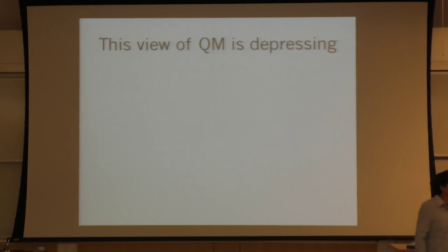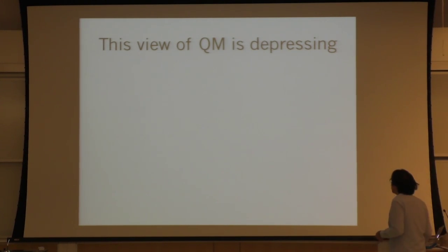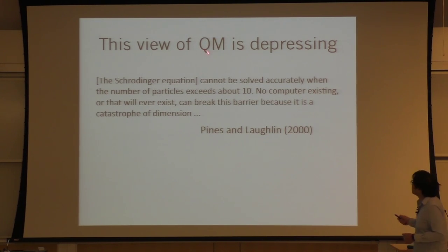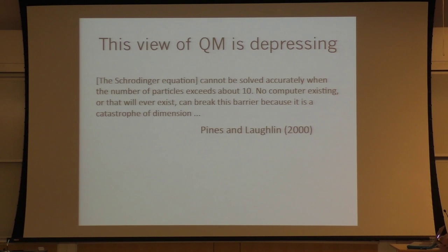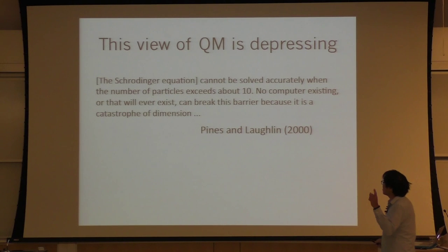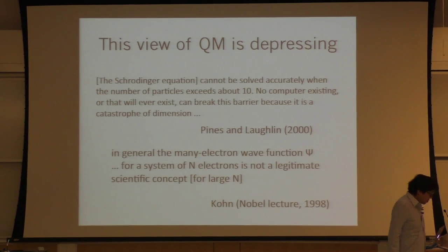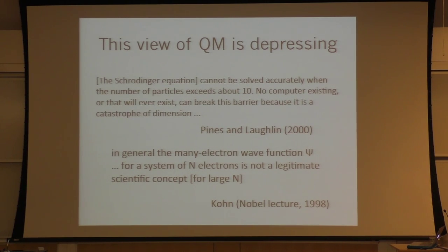This exponential complexity is a depressing viewpoint — if quantum mechanics really requires an exponential amount of information to represent anything, it's a useless theory. That viewpoint has been taken by famous people. David Pines and Bob Laughlin stated the Schrödinger equation cannot be solved accurately for more than ten particles, predicting no computer will ever break this barrier — a catastrophe of dimension. Walter Kohn argued the wave function for many particles is not a legitimate scientific concept.